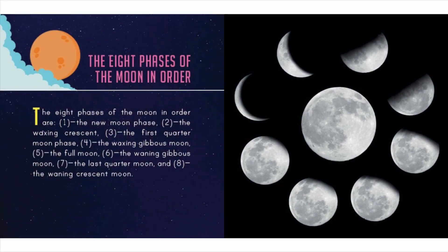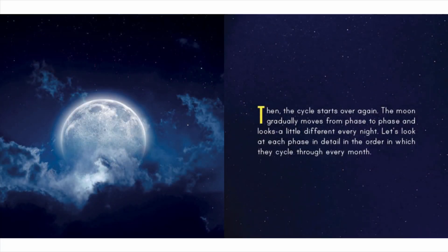The eight phases of the moon in order are: one, the new moon phase; two, the waxing crescent; three, the first quarter moon phase; four, the waxing gibbous moon; five, the full moon; six, the waning gibbous moon; seven, the last quarter moon; and eight, the waning crescent moon. Then the cycle starts over again. The moon gradually moves from phase to phase and looks a little different every night. Let's look at each phase in detail in the order in which they cycle through every month.